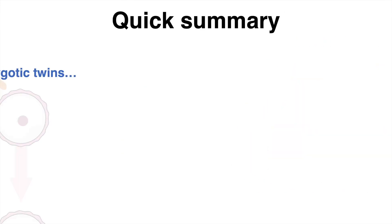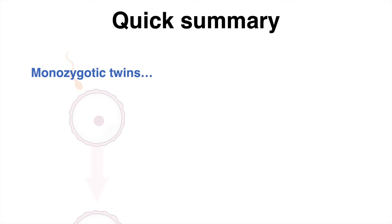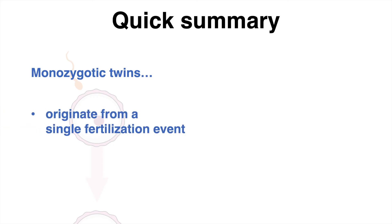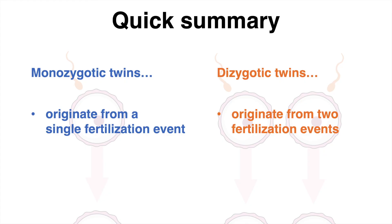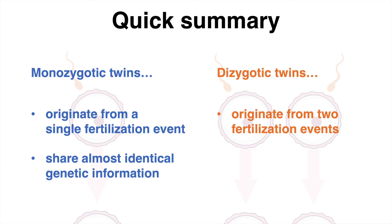In summary, monozygotic or identical twins originate from one single fertilization event and the following post-zygotic splitting, whereas dizygotic twins are a result of two separate eggs fertilized by different sperm cells. We have learned that monozygotic twins share almost identical genetic information, whereas dizygotic twins share only 50% of it.